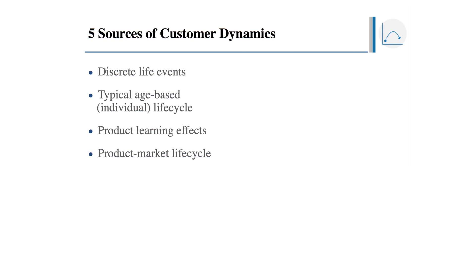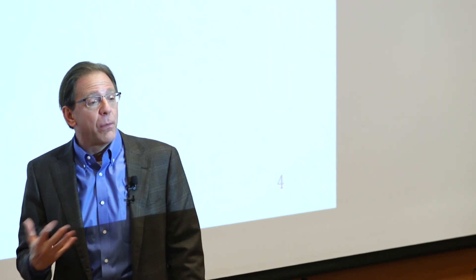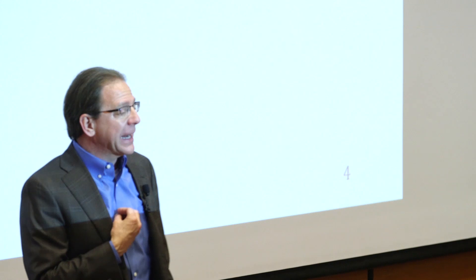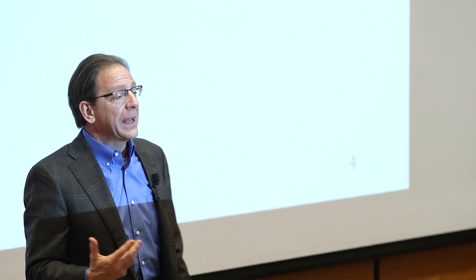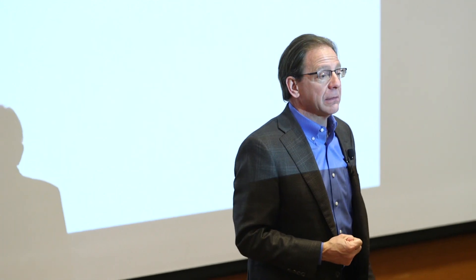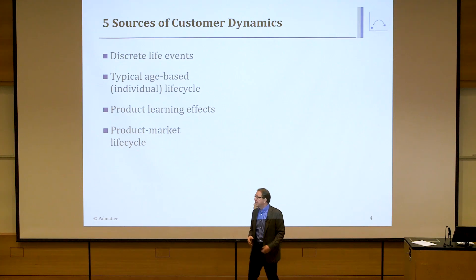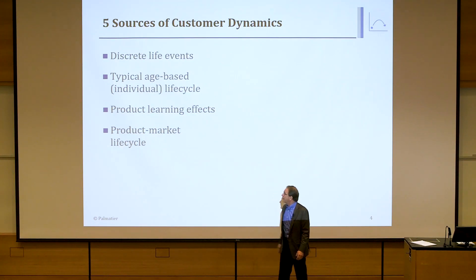The fourth source is the product market life cycle. As the industry matures, people's perceived risk and how they want to shop for it changes — not at the individual level, but at the whole industry level. For example, when PCs were first launched, people might have only wanted to buy at a retail store. But as the industry matured and computing products became more standardized, people became much more comfortable buying online.